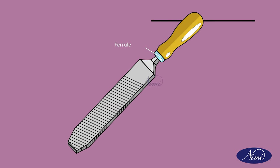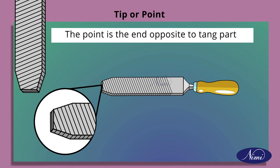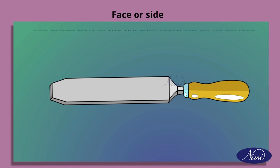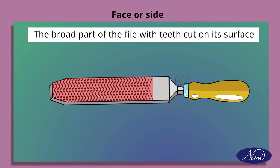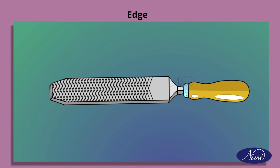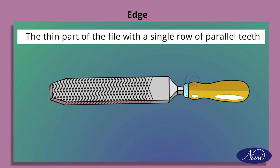Let us see them one by one. The first one, tip or point: this is the end opposite to the tang part. There are no teeth on it; it has a short width and is used to remove scales from the workpiece. Number two, face or side: the broad part of the file with teeth cut on its surface. Number three, edge: the thin part of the file with a single row of parallel teeth.